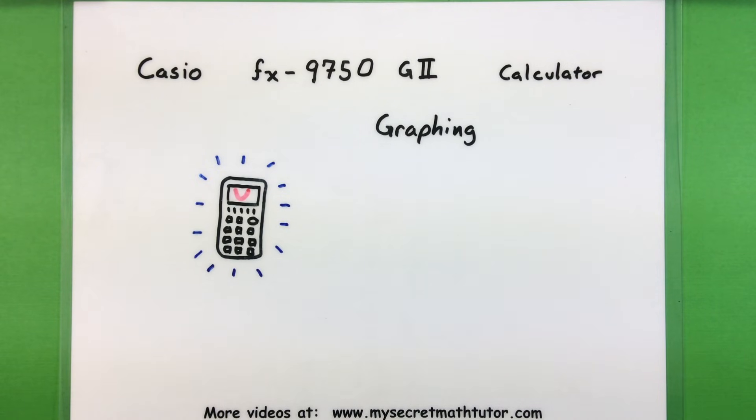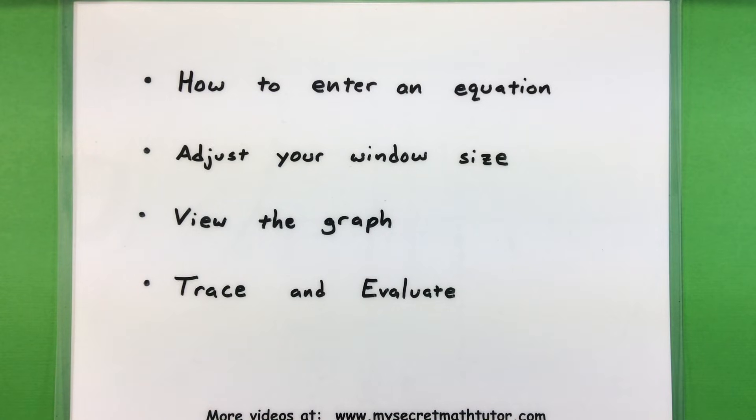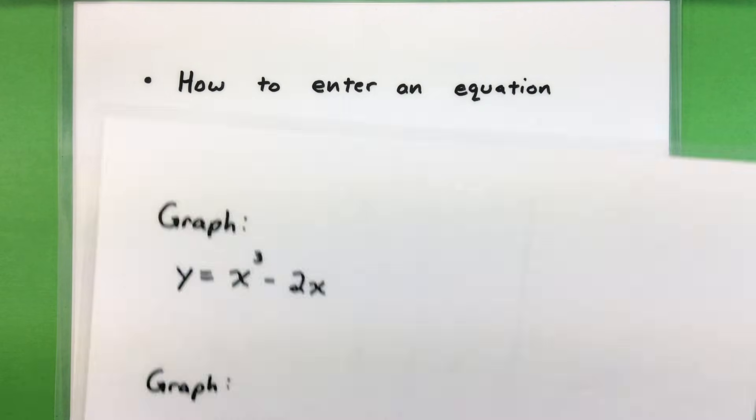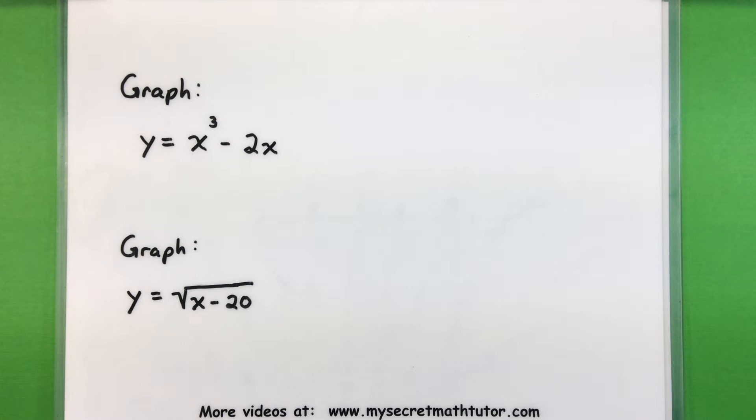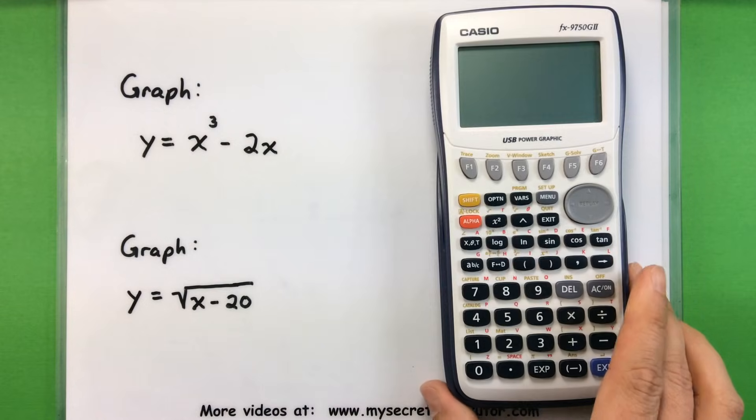Hello and welcome to My Secret Math Tutor. For this video we're going to take our Casio FX-9750 G2 calculator and get into some basic graphing. Specifically, I want to cover how you can start entering equations into the calculator, how you can adjust your window size so you get the best picture, and how you view that graph and start finding some key values or key points on that graph. That's what we call the trace and evaluate features of the calculator. So let's go ahead and jump right into it.